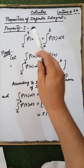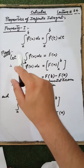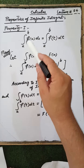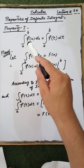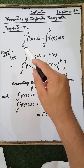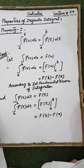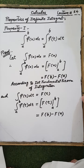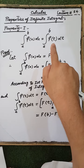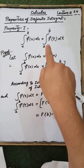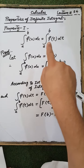Our next topic is properties of the definite integral. Property number one: the integral of f(x) on the interval [a, b] with respect to x is equal to the integral of f(t) dt on the interval [a, b]. That is, if we change the variable x by a variable t, the result will be the same.